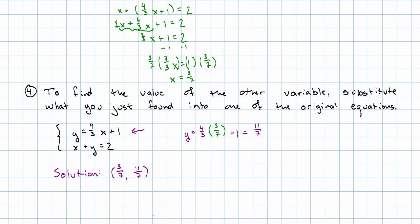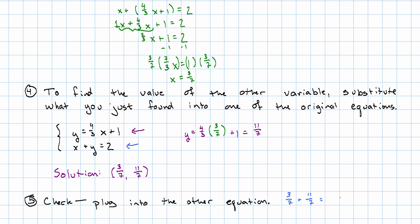Our solution is the x we found in step three together with the y we found in step four. Now, if we want to check that the answer is correct — and I usually do, because this is a process where it's easy to make mistakes — we used the first equation to find the solution, so we'll use the second equation to check. x is three-sevenths, y is eleven-sevenths; add those together and we get two, so that's correct. Let's see one more example.